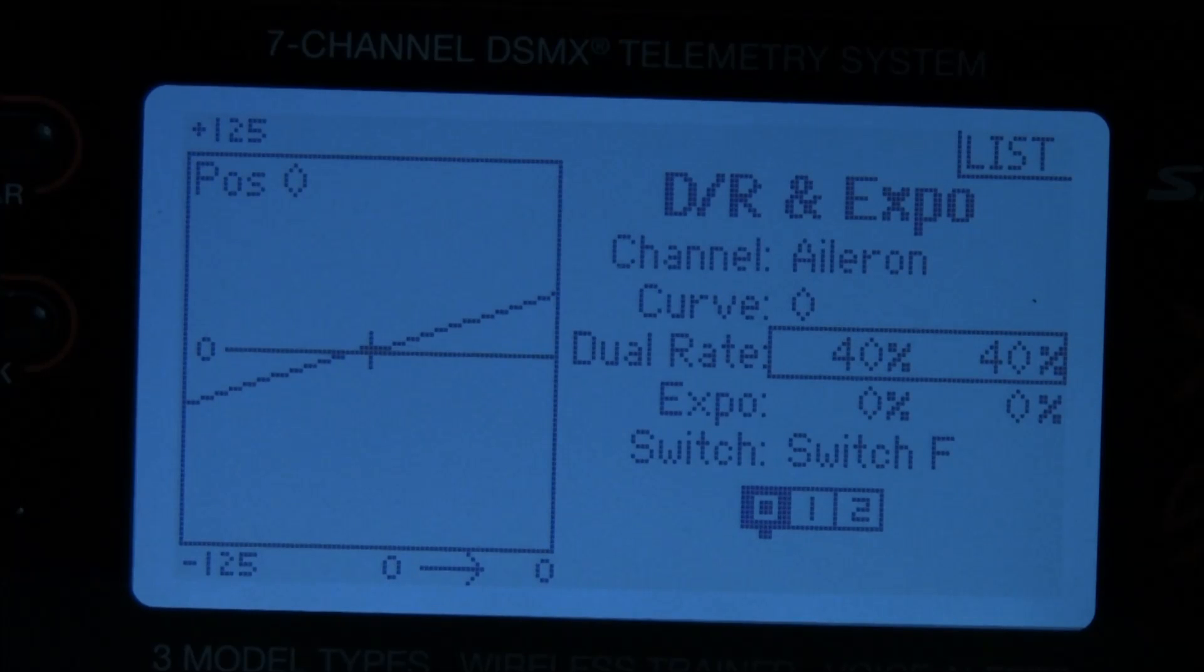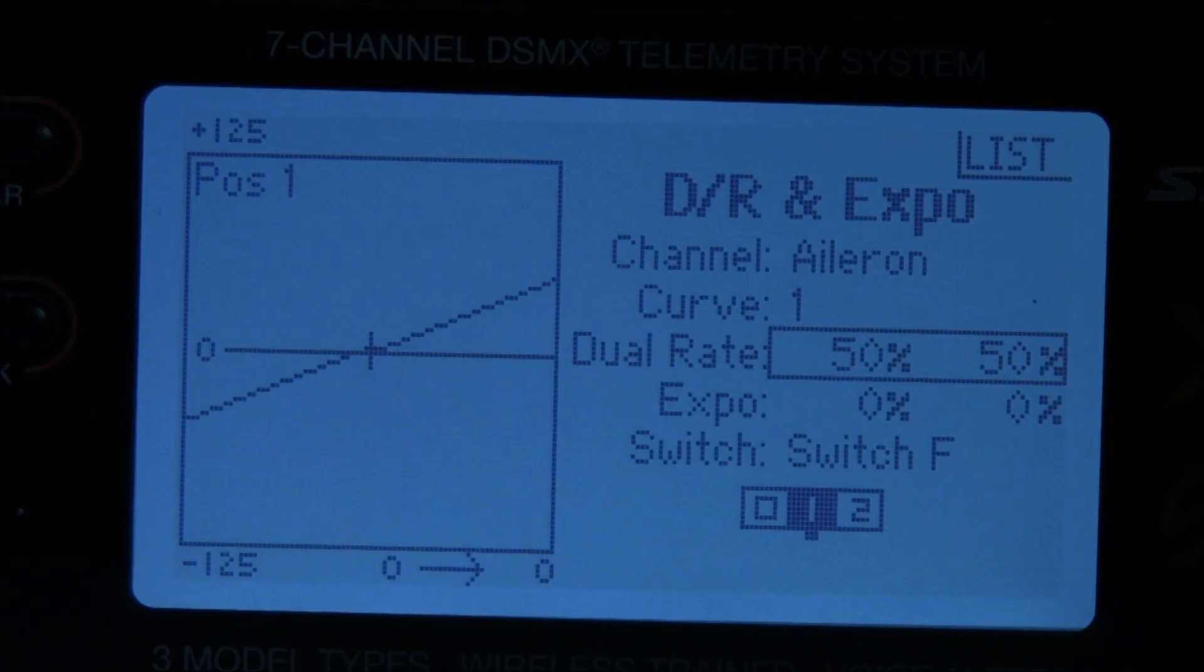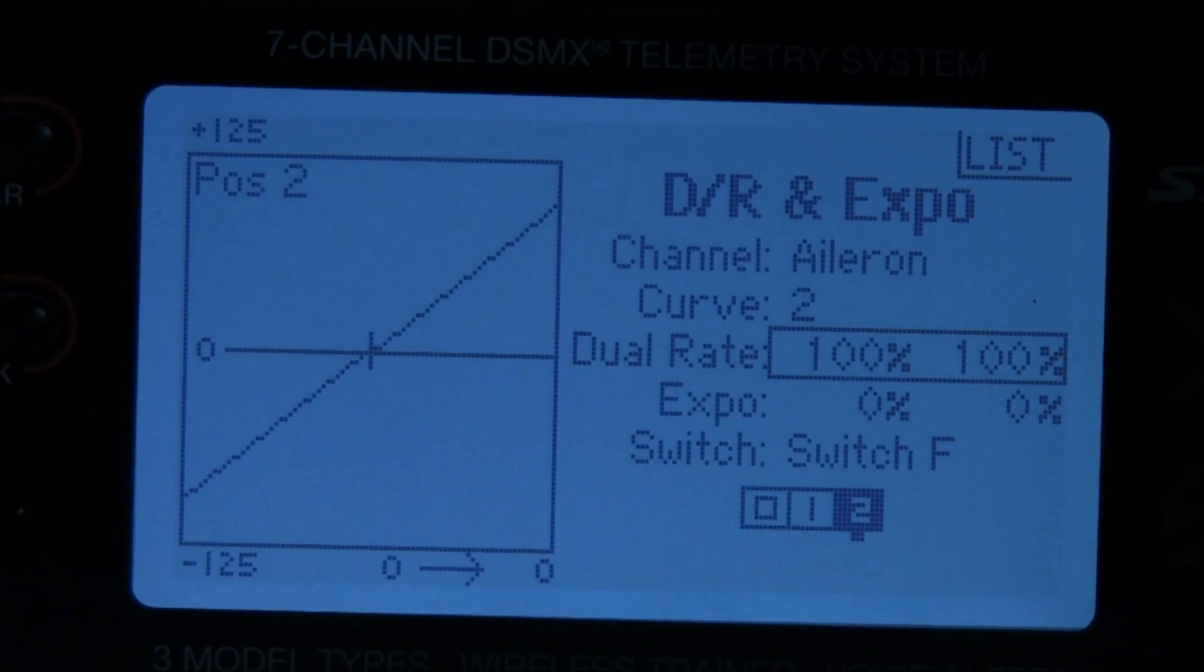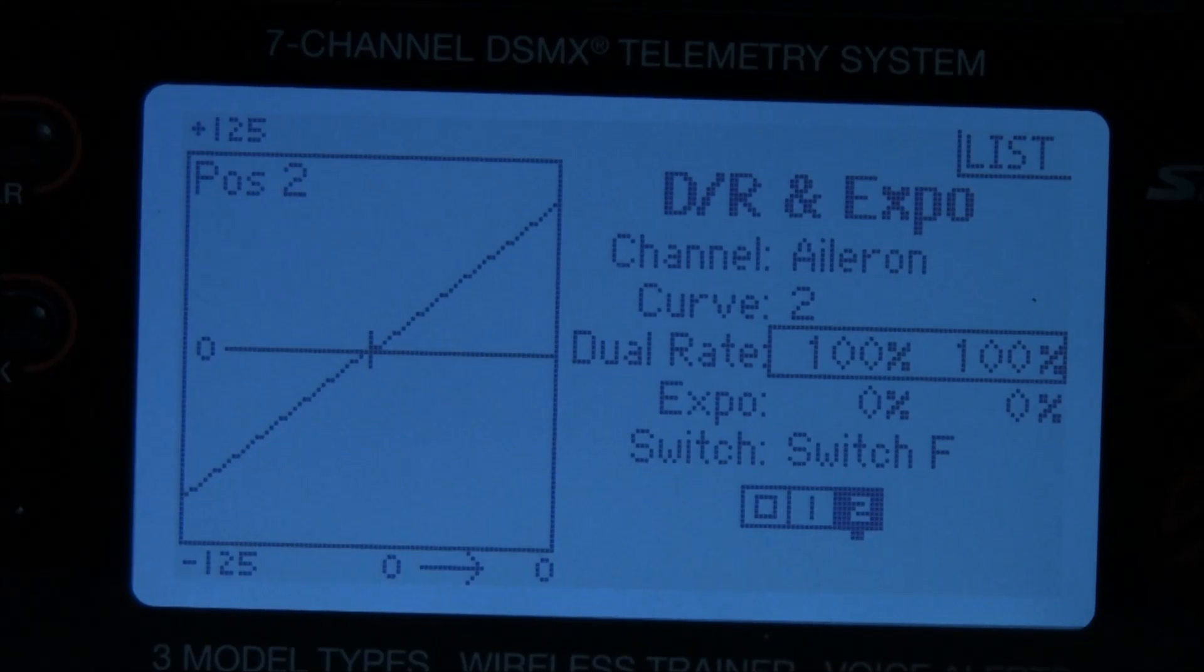In the zero position, 40 percent of full throw. Number one position, 50 percent of full throw. And in the number two position, 100 percent throw. So that's it. You've done your dual rate and triple rates in this case. Let's move on from here.